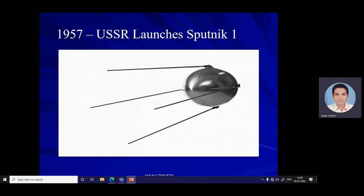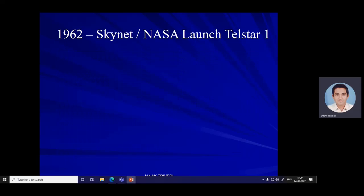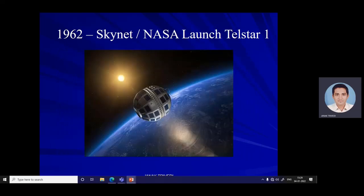Then in 1962, NASA launched Telstar 1. Telstar 1 was the first transatlantic communication satellite, relaying a television signal from the Andover Earth Station in Maine to the Pleumeur-Bodou Telecom Center in Brittany, France. Telstar used a low Earth orbit (LEO) and was tracked by ground stations in Maine and Britain. Over the course of two years, Telstar 1 transmitted over 500 telephone, telegraph, and television transmissions, proving the concept that satellites could be used for communication.